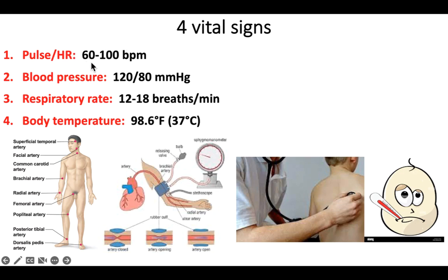The more physically fit someone is, the lower their resting heart rate might be; if less physically fit, it might be at the higher end. Blood pressure is a big topic for this chapter. Normal blood pressure numbers are often given as 120 over 80 in millimeters of mercury. That's measured using a stethoscope and a blood pressure cuff to determine the pressure when the ventricles are contracted — systolic blood pressure — and when the ventricle is relaxed — diastolic. This is systemic blood pressure, not pulmonary. Respiratory rate is another important vital sign: 12 to 18 breaths per minute.